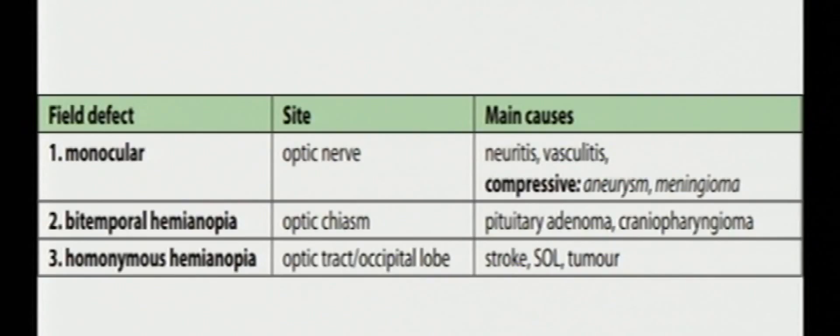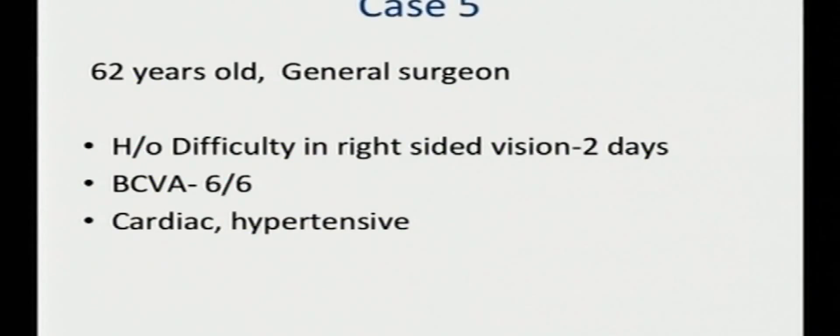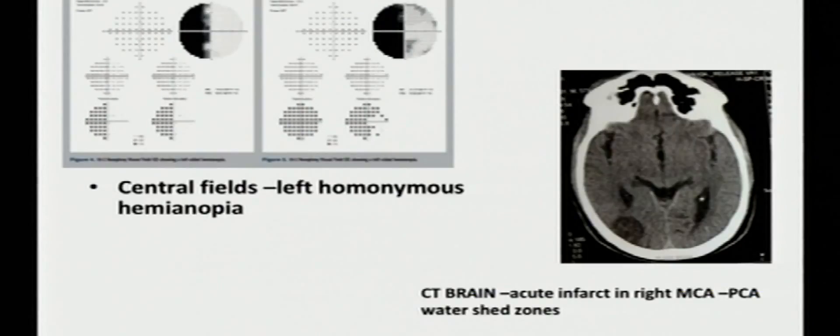Visual fields again. This patient is a doctor, a general surgeon with difficulty in the right-sided vision of two days duration. Vision was 6/6. This is the fields of the patient: right homonymous hemianopia. We imaged the patient. She had an infarct in the left PCA territory. This is another example of a left homonymous hemianopia and here you can see the acute infarct in the right PCA zone.